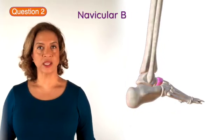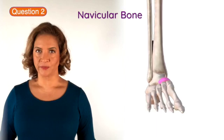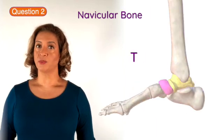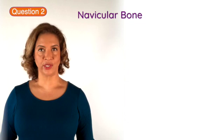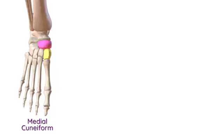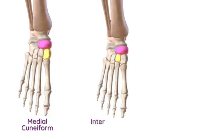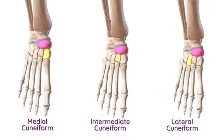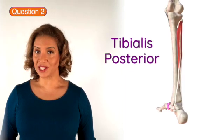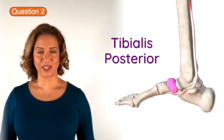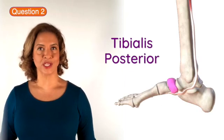Question 2. This is the navicular bone and it is found in the foot. The navicular articulates proximally with the talus and distally with the three cuneiform bones, which are the medial, intermediate and lateral cuneiform bones. It also articulates with the cuboid bone.